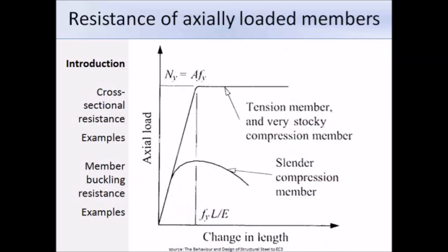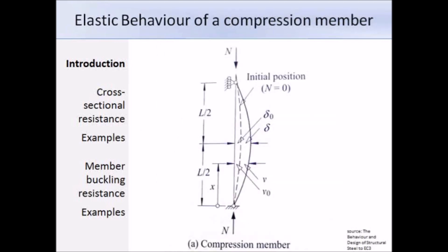As indicated on the diagram, very stocky compression members fail the same as tension members, but unlike tension members whose resistance is independent of length, the length of a compression member has a significant effect on its resistance. Long slender members will be more likely to buckle and therefore fail earlier than a very stocky compression member, which will fail by squashing. This decrease in resistance is due to the fact that when a load N is applied, it causes bending in a member which already has initial curvature, as indicated by the dashed line on the diagram. This bending is more noticeable in slender columns, so an increase in length means a decrease in resistance.